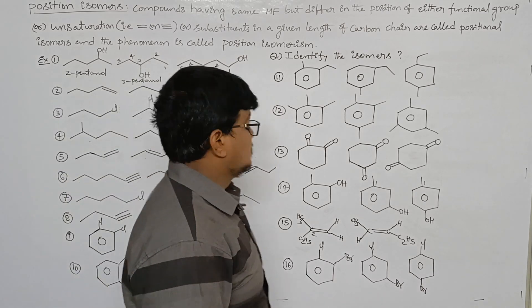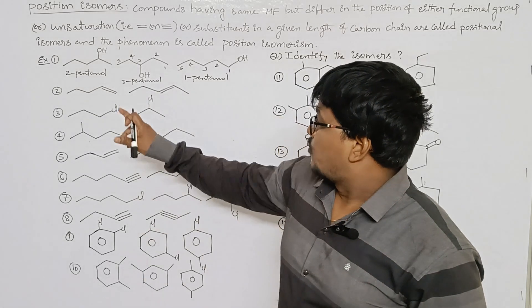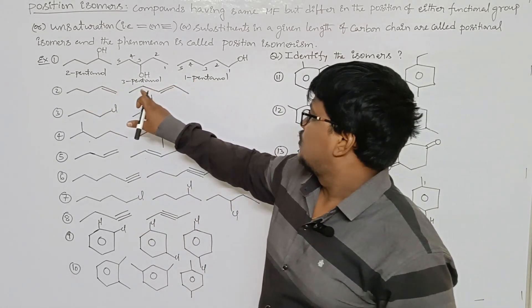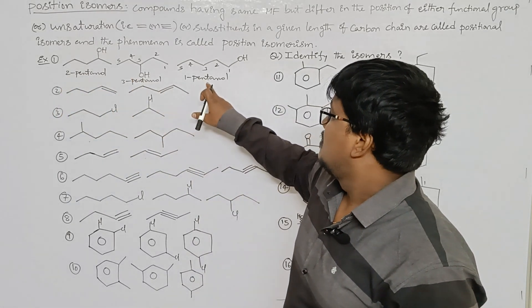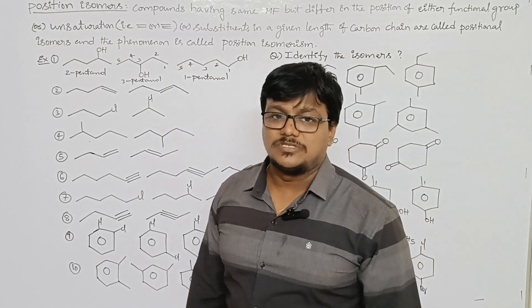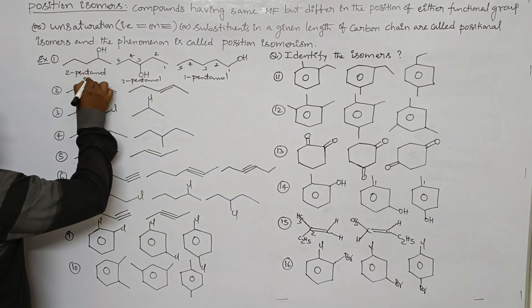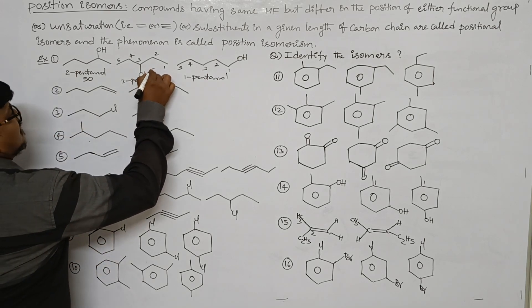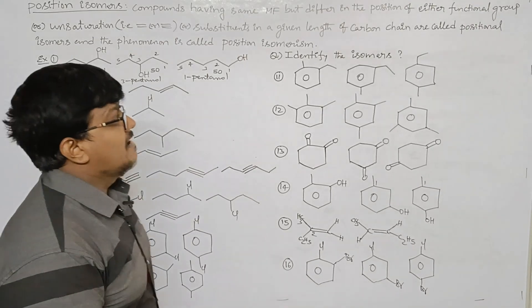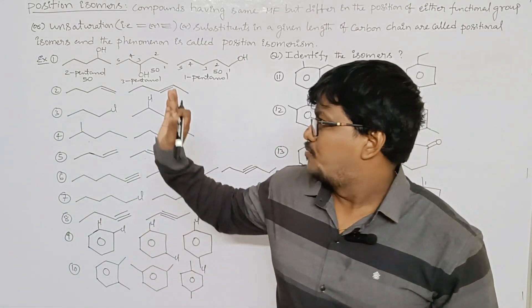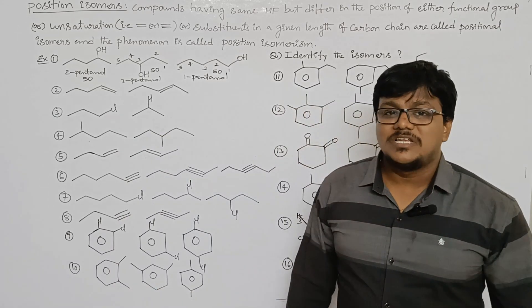All three compounds have the same functional group, the same molecular formula, the same root word — pent. But the position differs. The first compound has the alcohol at the second position, the second compound at the third position, and the third compound at the first position. These three compounds have the same isomeric number — 50 — same molecular formula but differ in the position of the OH functional group. Hence, these three are positional isomers.